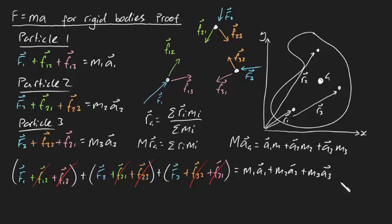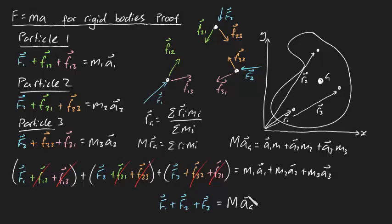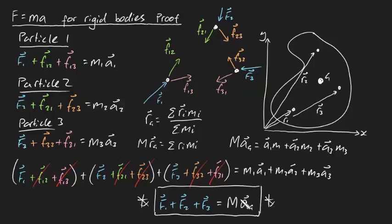So in summary, F1 plus F2 plus F3 — the sum of all external forces acting on your entire rigid body — is going to be equal to your total mass times by your acceleration of your center of mass. This is a formal proof, albeit only in the case of three particles, but hopefully you can see that this can be generalized to N particles. The sum of all external forces acting on your rigid body equals the total mass of your body times the acceleration of its center of mass. I hope that made sense, guys. Cheers.